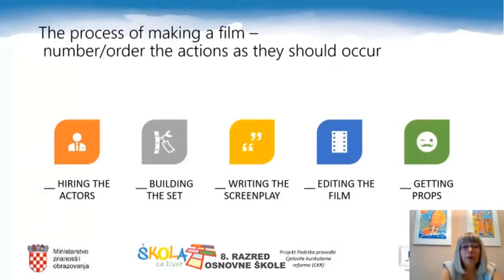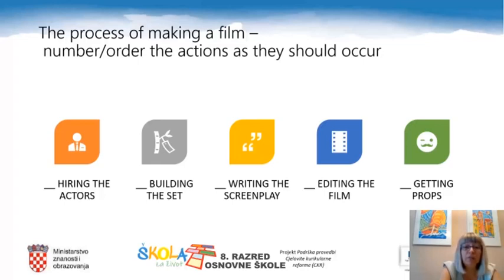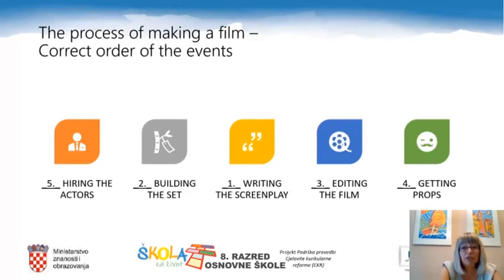The fifth part of the mind map was the process of making a film. There are five actions enlisted here: hiring the actors, building the set, writing the screenplay, editing the film, and getting props. Please, in your notebooks, number or order the actions as they should occur. Let's check.